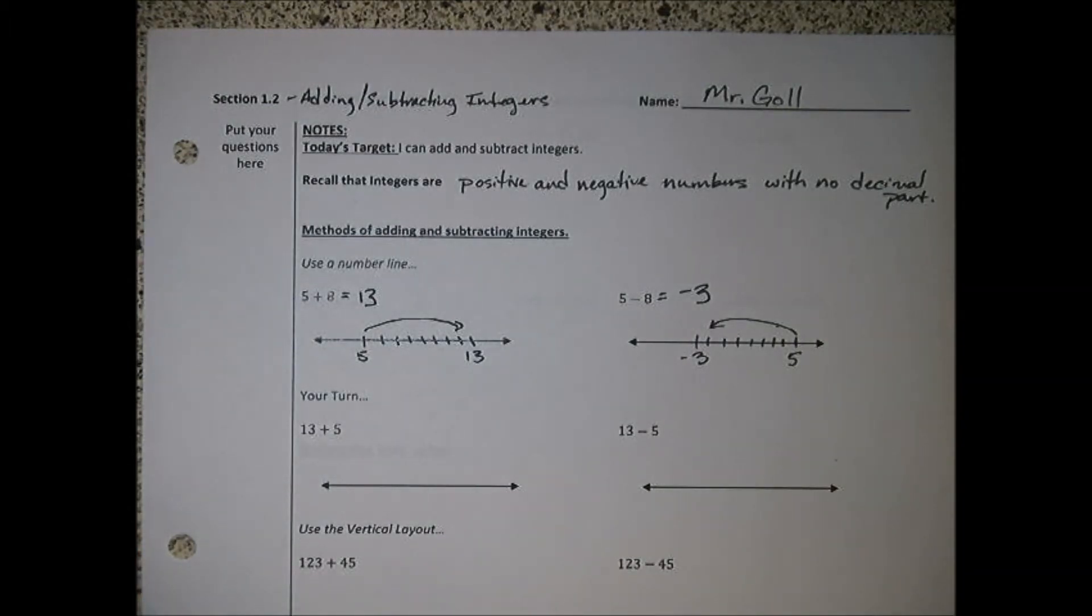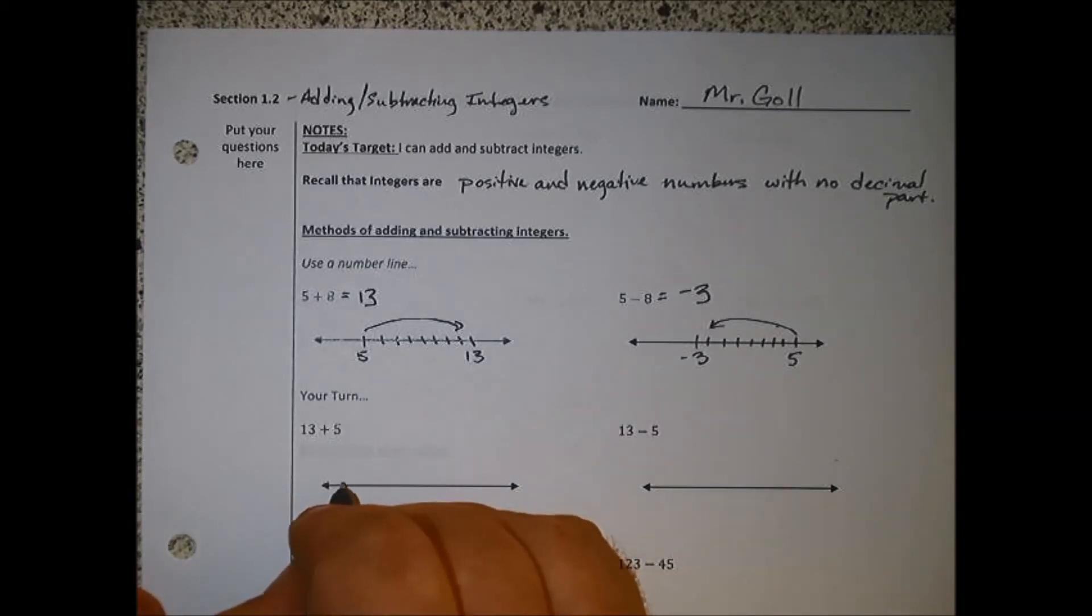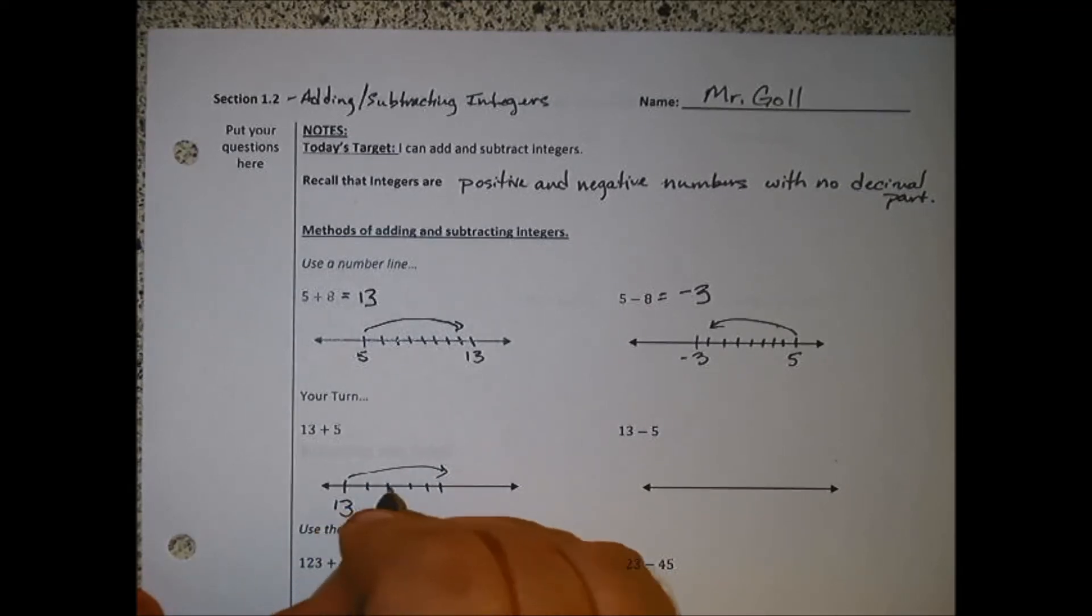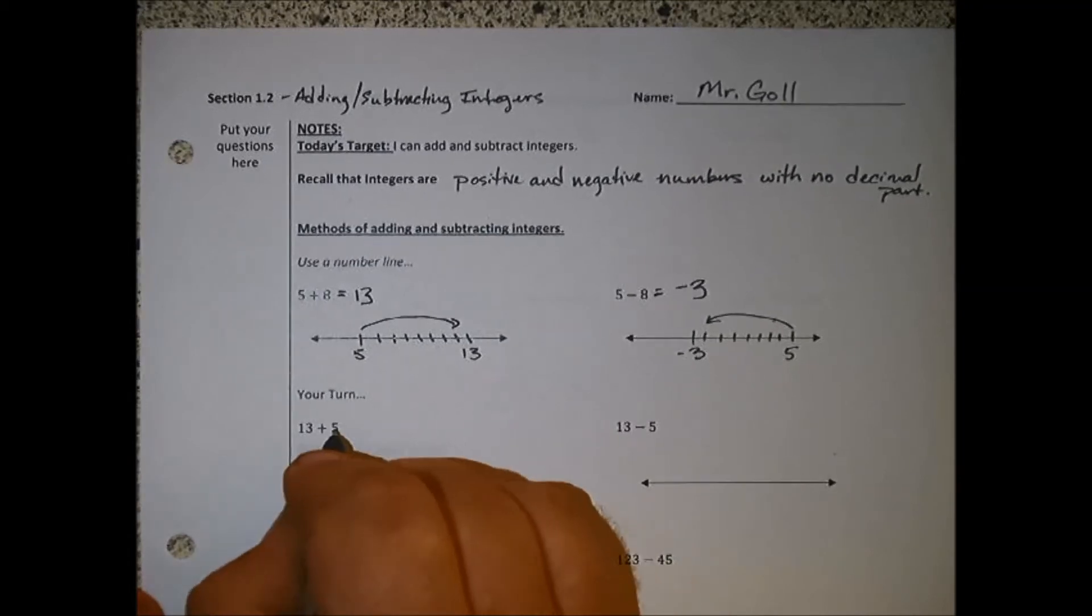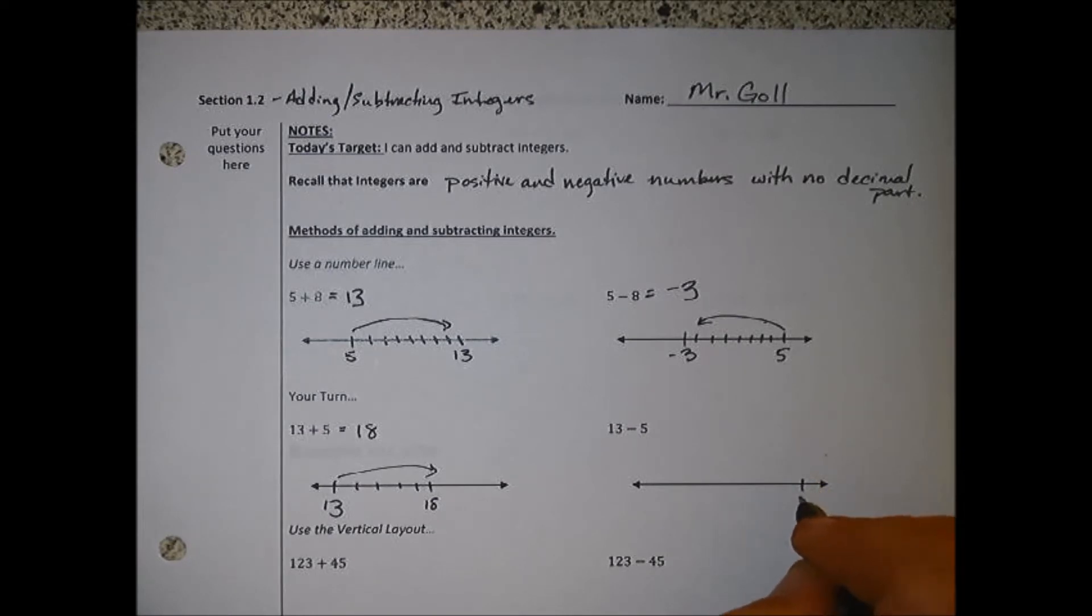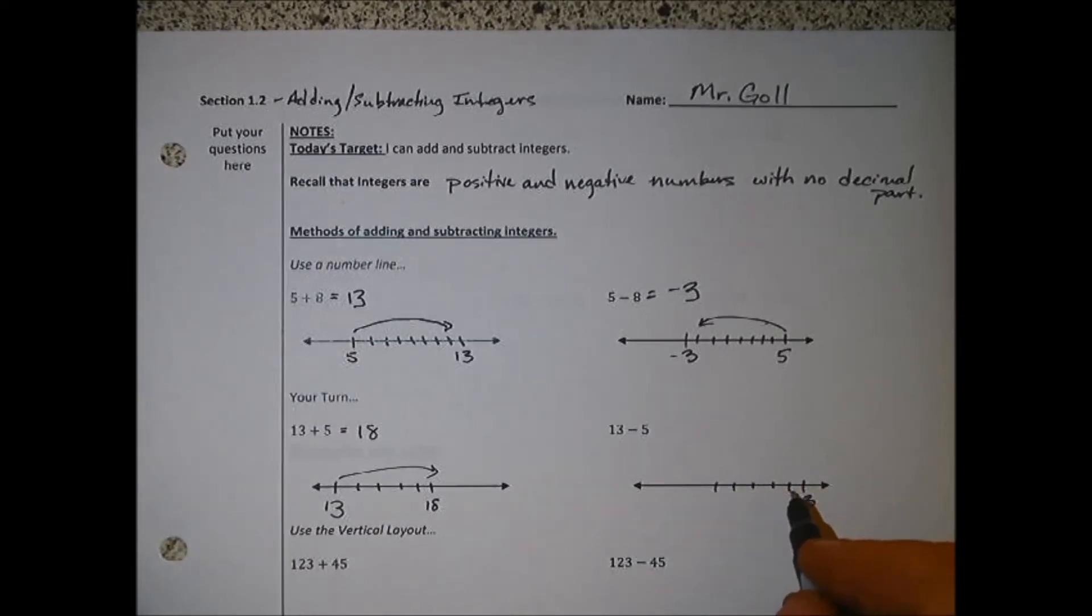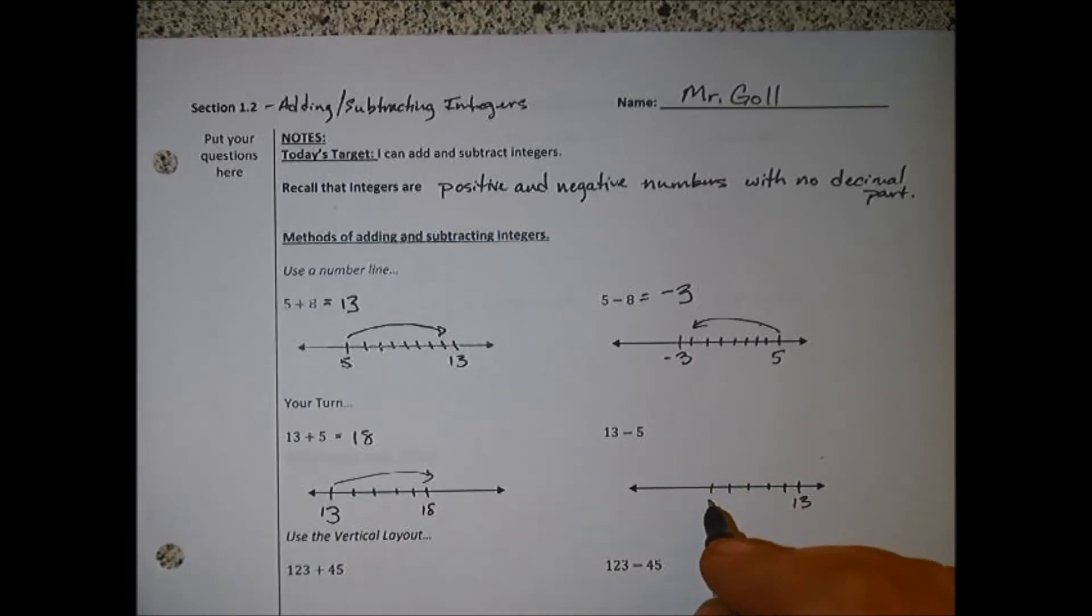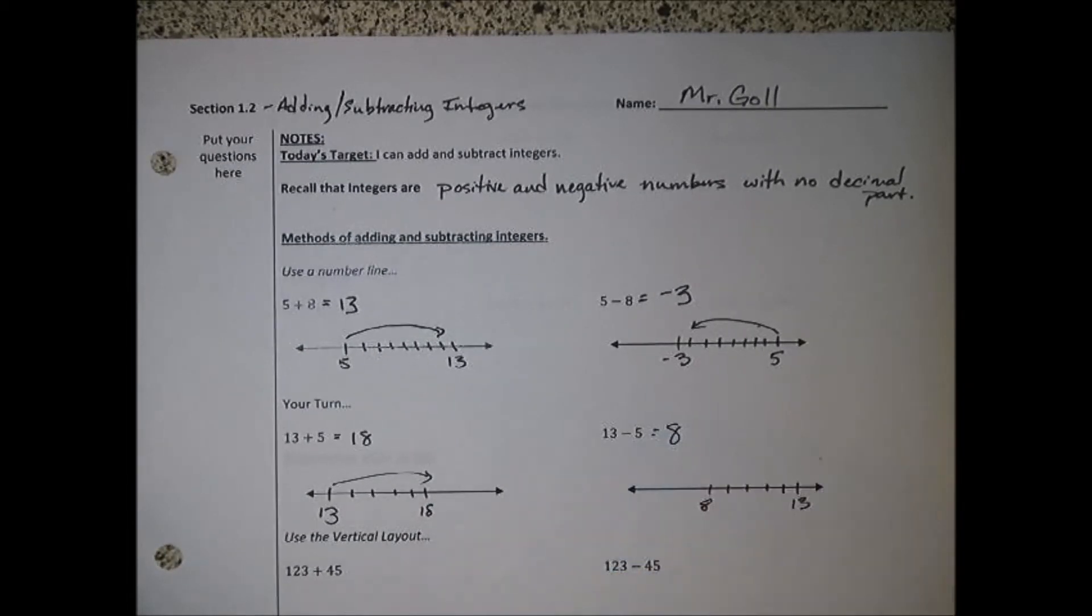Go ahead and pause the video and try these next two. All right, welcome back. Maybe you started 13 over here and we add 1, 2, 3, 4, 5: 14, 15, 16, 17, 18. 13 plus 5 is 18. Maybe we started over here and went back 5: 1, 2, 3, 4, 5. We have 12, 11, 10, 9, 8.